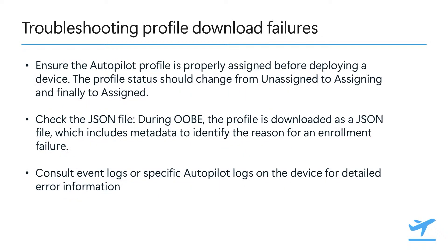The final topic for Autopilot is troubleshooting deployment profile download failures. The first step is making sure your Autopilot profile is properly assigned — you can review the status from the Intune console to ensure this happened before the device attempted to provision. If everything is assigned properly, look into the JSON file downloaded during OOBE, which includes a lot of metadata that will help you identify the reason for the failure. Then consult the event logs and check the error you see, which can indicate different types of issues.